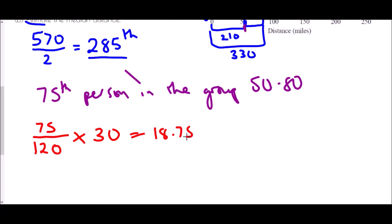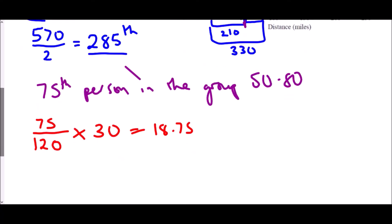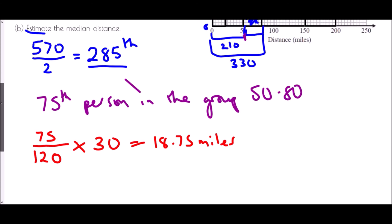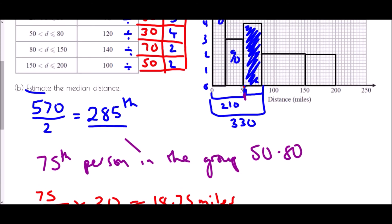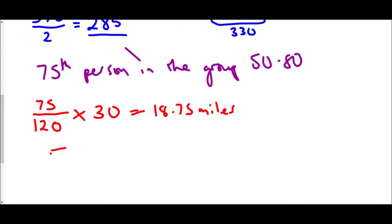Now this is actually a distance, it's 18.75 miles and we are 18.75 miles into that group. So in order to find where I'm actually looking at I need to add it on to the 50 which was the starting point.